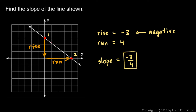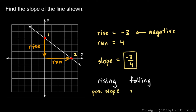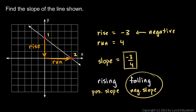In general, if you have a graph that is going up as you move from left to right, we say the graph is rising. And if you have a graph that is going down as you go from left to right, as is the case here, we say the graph is falling. A graph that is rising will have a positive slope, and a graph that is falling has a negative slope. In this particular case, the graph is falling, and the slope is negative.